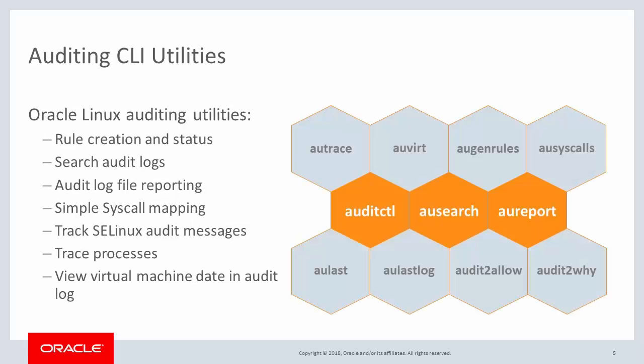The auditing system has many command utilities to support various auditing, reporting, and other supporting functions. AuditCTL, AUSearch, and AUReport are the ones you will most commonly use. AuditCTL allows you to configure the auditing process and create audit rules. AUSearch and AUReport allow you to search the audit log for violation event information and create summary reports from the log.